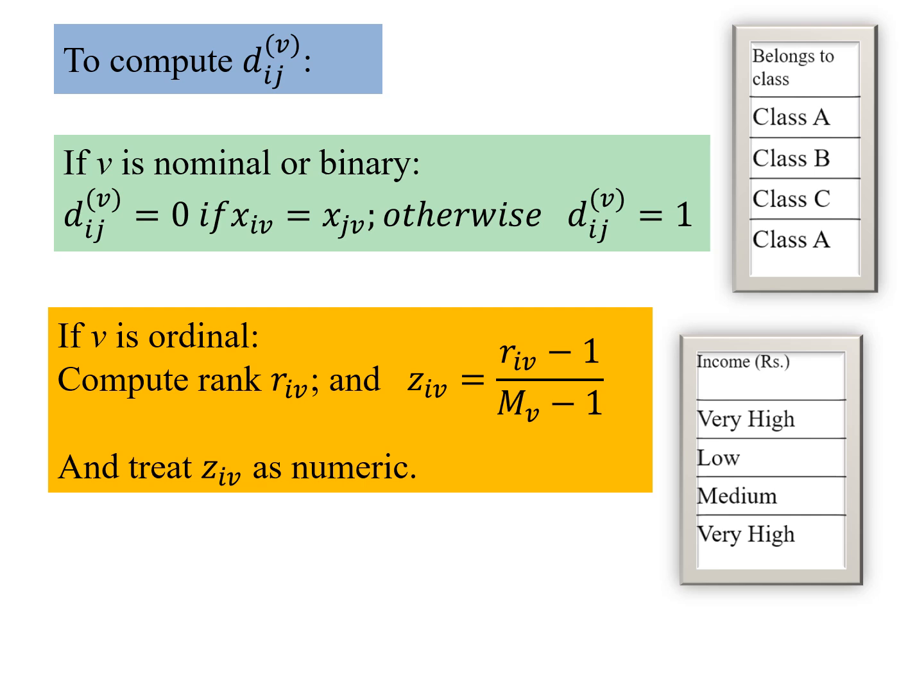So that would be used for the distance. For the nominal or binary, this dij is 0 if the values match. So if the values for the i-th and j-th data point match for this v attribute, then the distance is 0, otherwise it is 1.